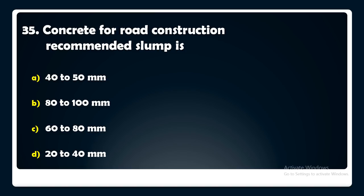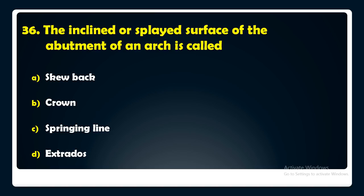The inclined or splayed surface of the abutment of an arch is called — skewback, crown, springing line, or extrados? The answer is: the inclined or splayed surface of the abutment of an arch is called a skewback.